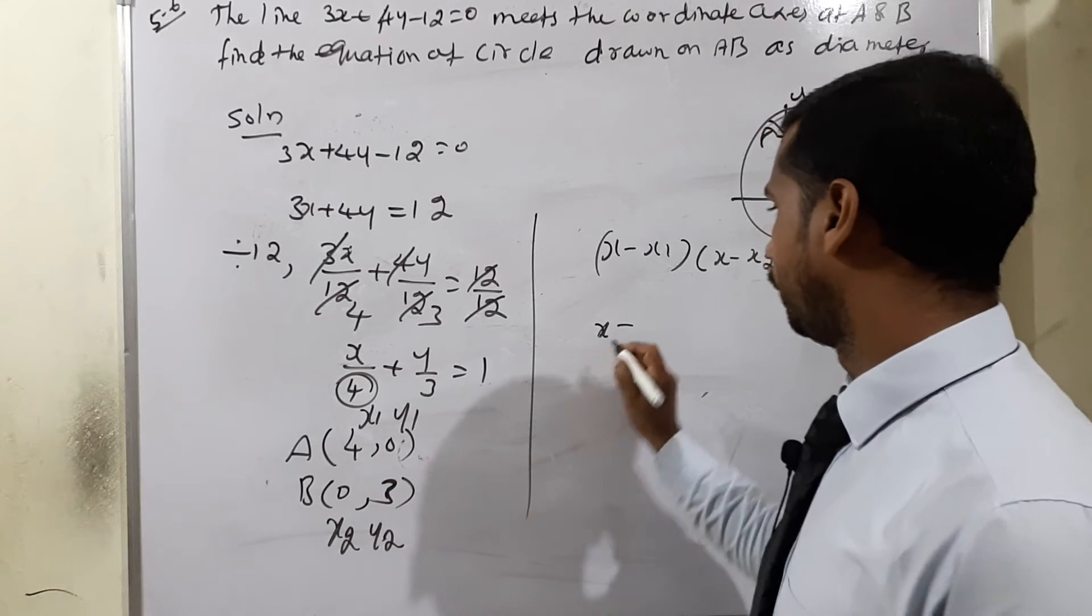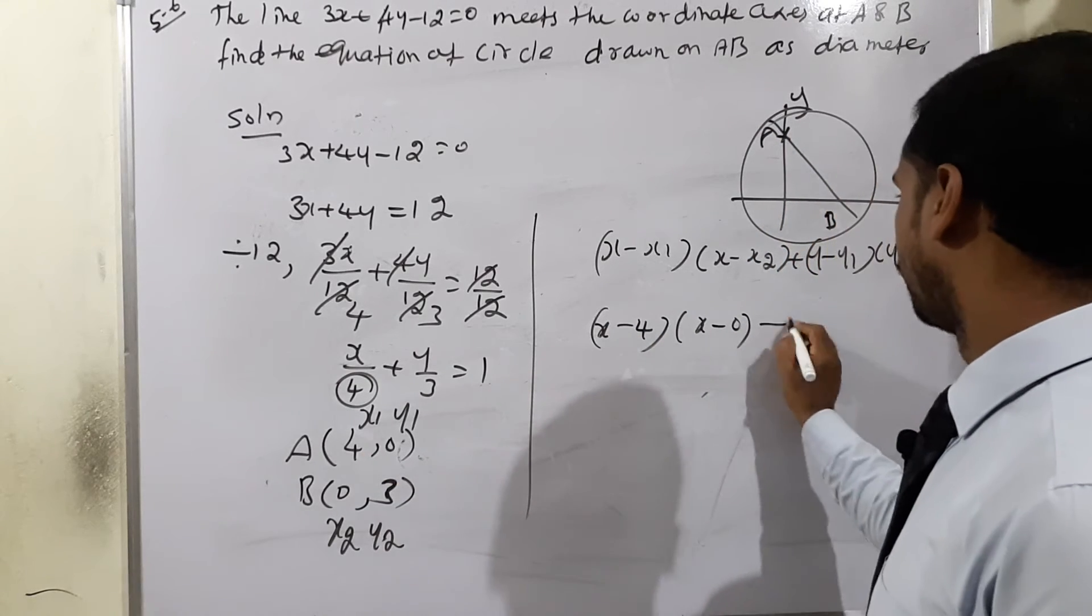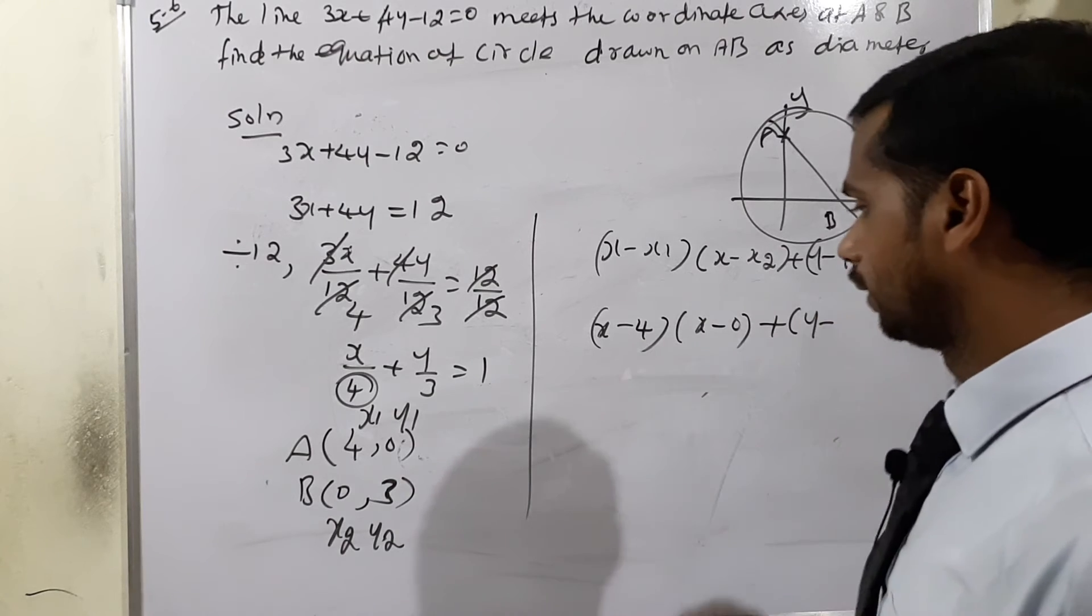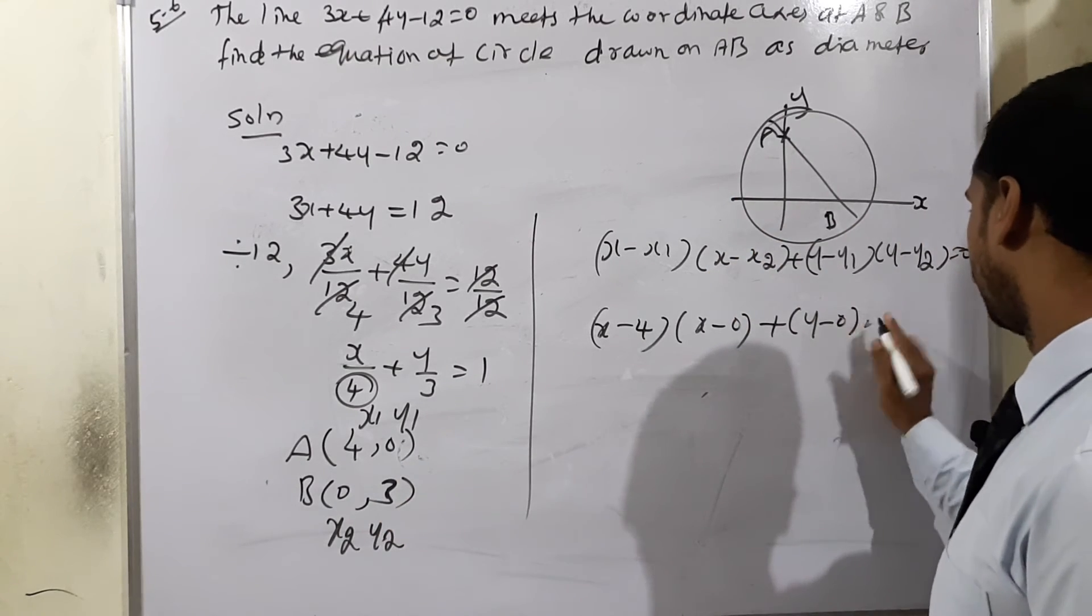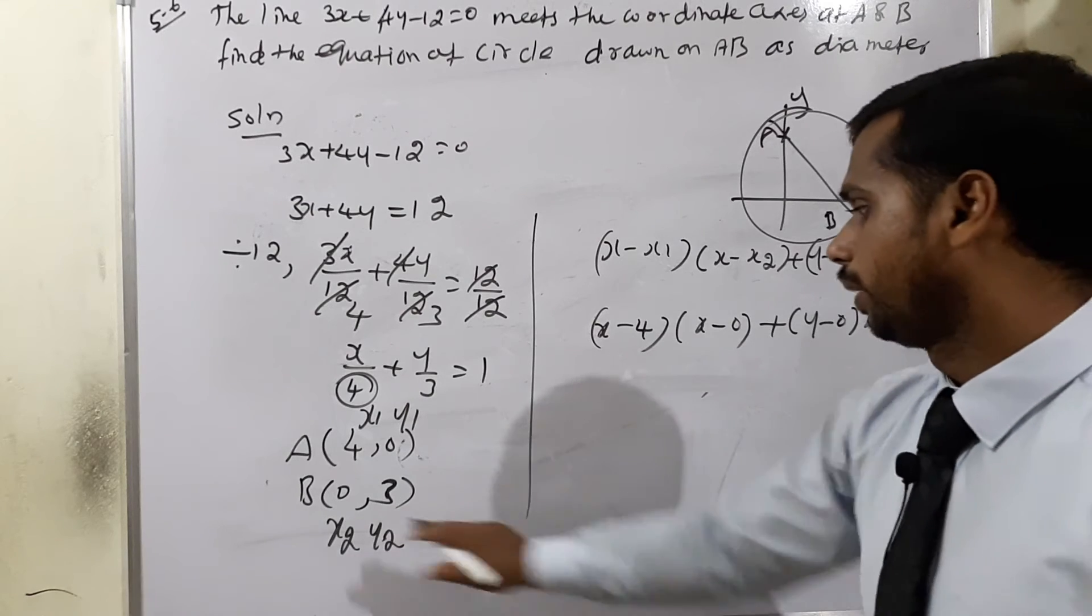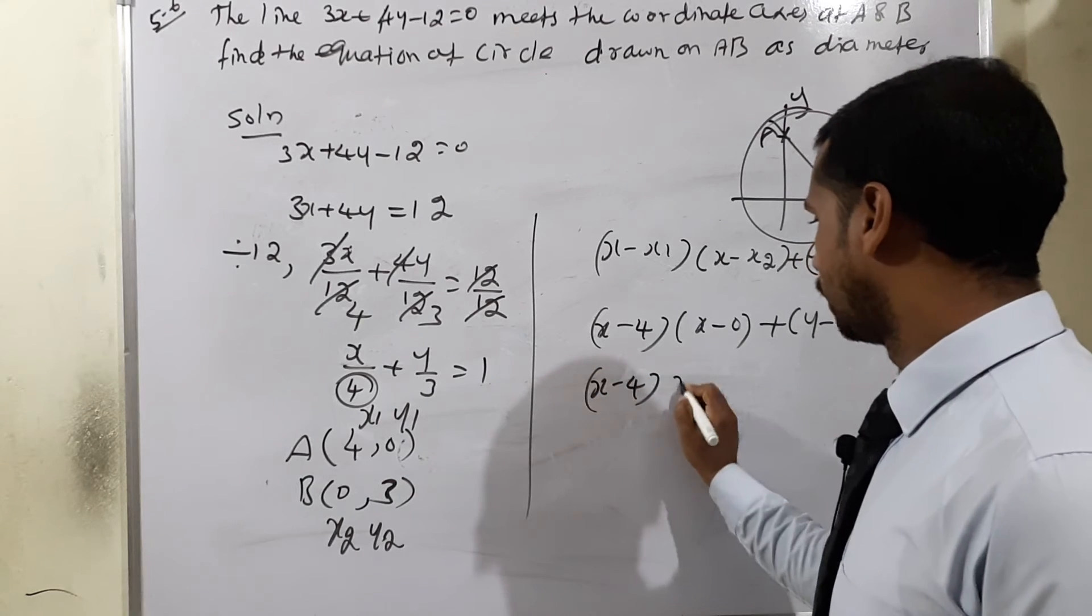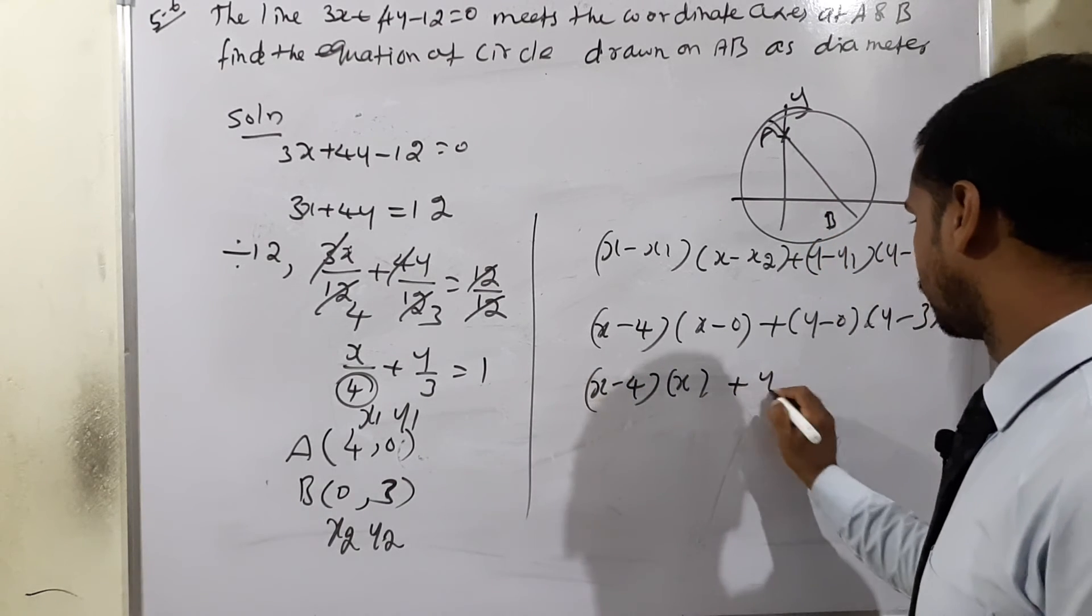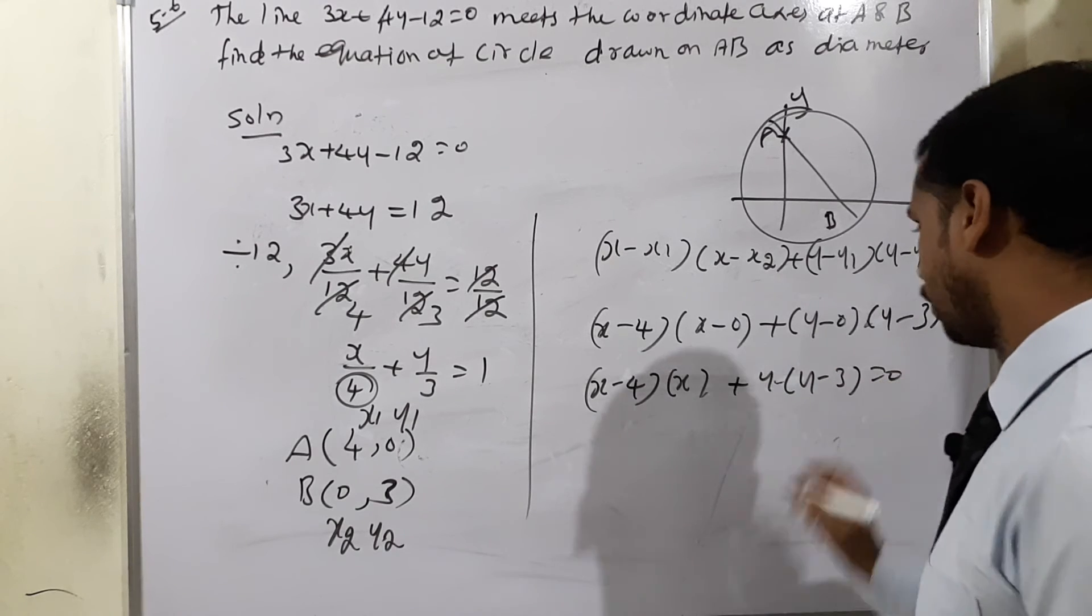Therefore, we can write x minus x1 means x minus 4, then x minus 0, plus again y minus y1, y1 is 0, then y minus y2 which is 3 equals 0. Therefore, x minus 4 into x plus y into y minus 3 equals 0.